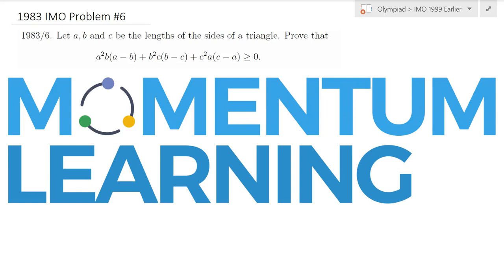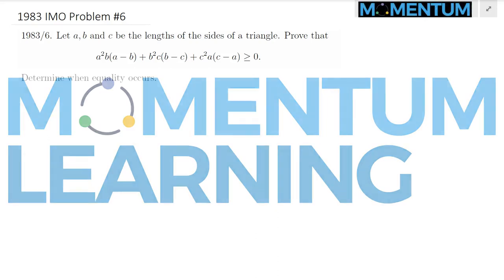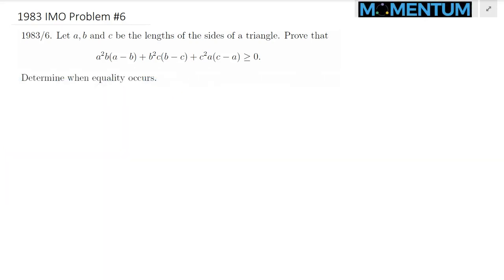Consider the following 1983 IMO problem number 6. Here is a view of this problem. ABC are the lengths of the sides of a triangle, and we would like to prove this inequality.